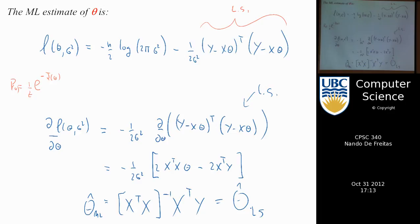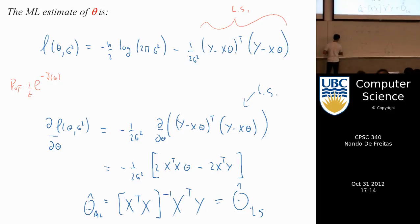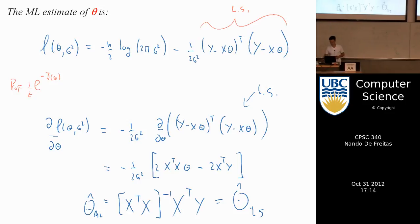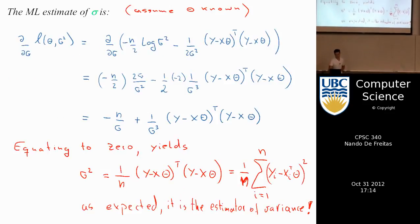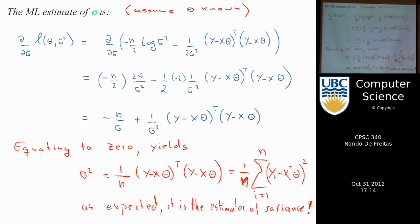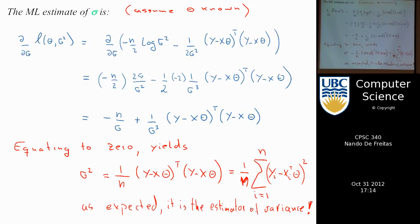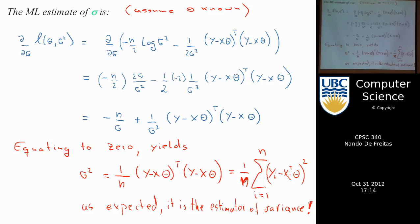I've introduced all this probability machinery and still get the same answer. What I'm trying to say is there's a mapping between cost functions and probabilities: maximizing a probability that looks like a quadratic is the same as minimizing a cost function. I can also compute the derivative with respect to σ², equate to zero, and get the usual formula for the variance of the data — we recover things that make sense.